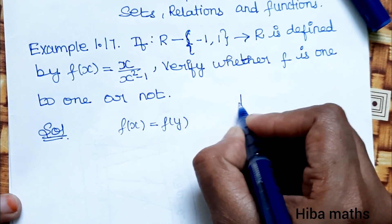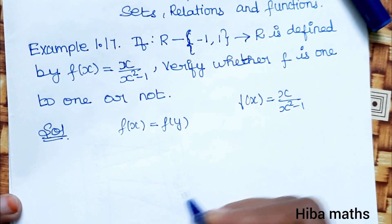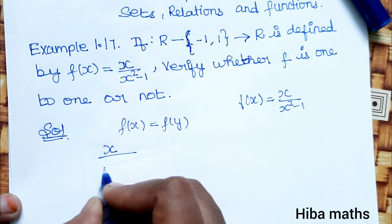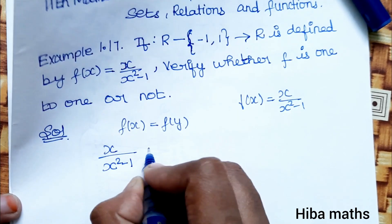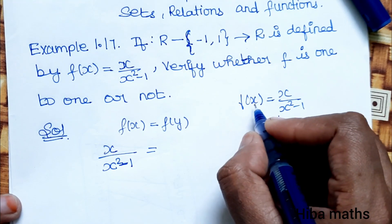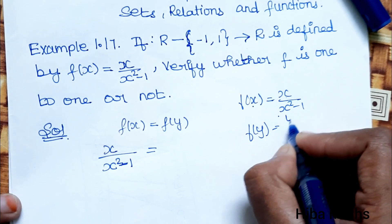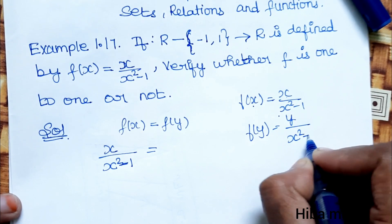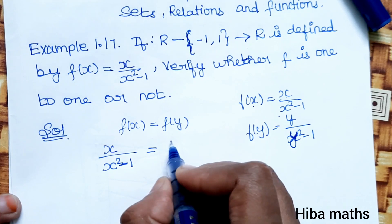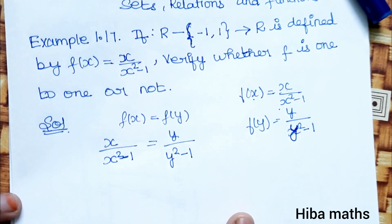The function f(x) = x divided by x squared minus 1. To verify one-to-one, assume f(x) = f(y). So x divided by x squared minus 1 is equal to y divided by y squared minus 1. We need to determine whether this implies x equals y.